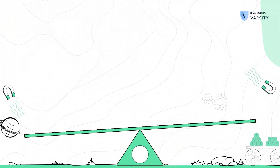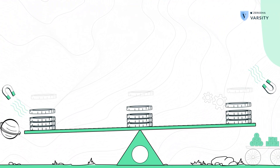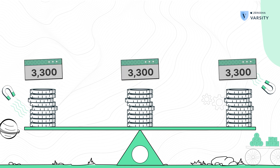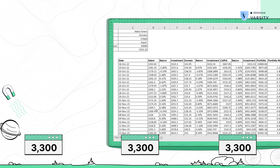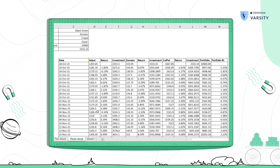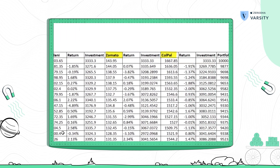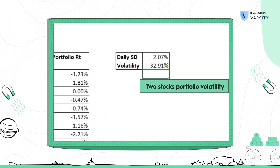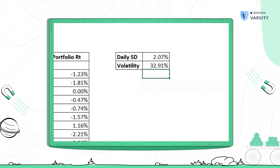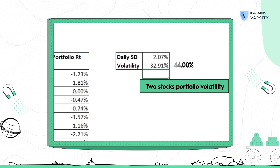One thing to note: again for the sake of simplicity, I am assuming this is an equal-weighted portfolio with roughly 3,300 rupees invested in each stock. The three-stock portfolio's risk or volatility has dropped to 32% from the two-stock portfolio's volatility of 44%.